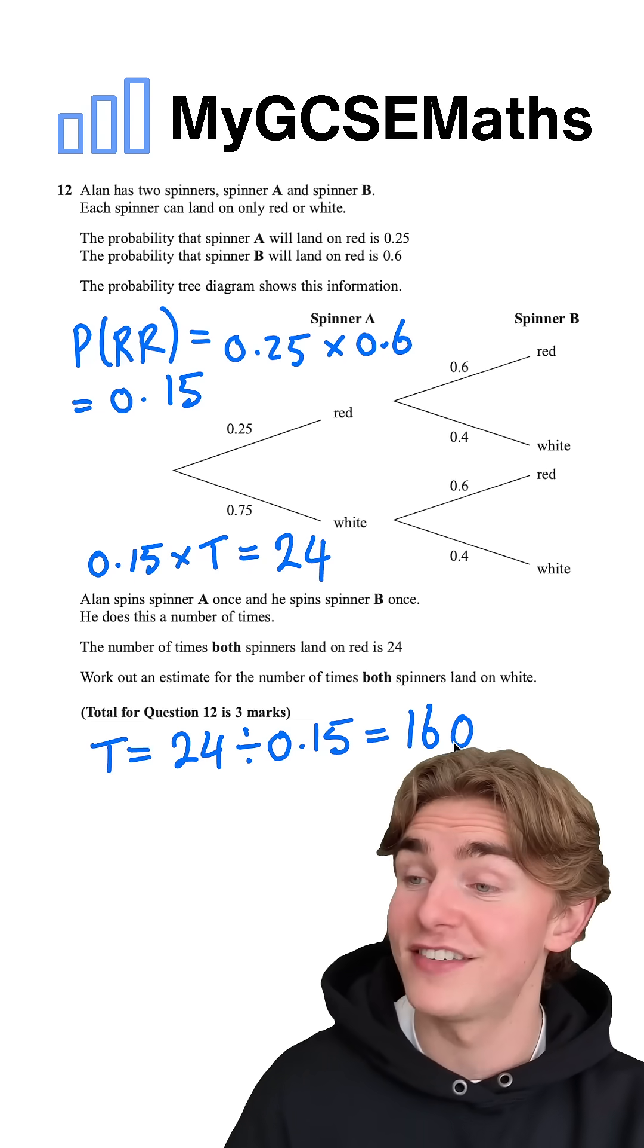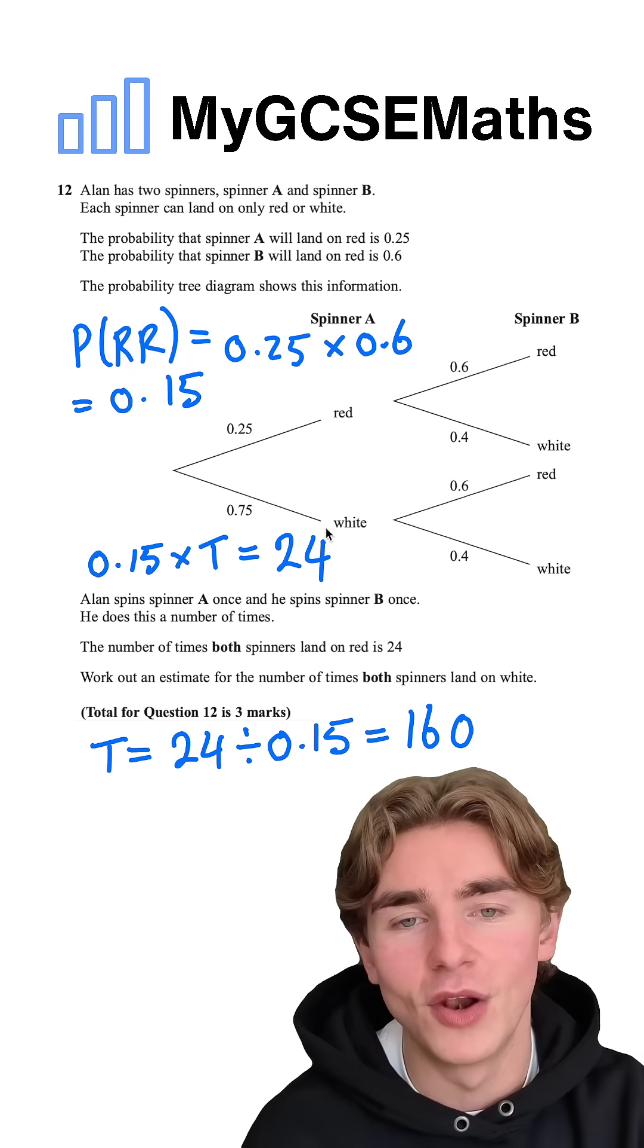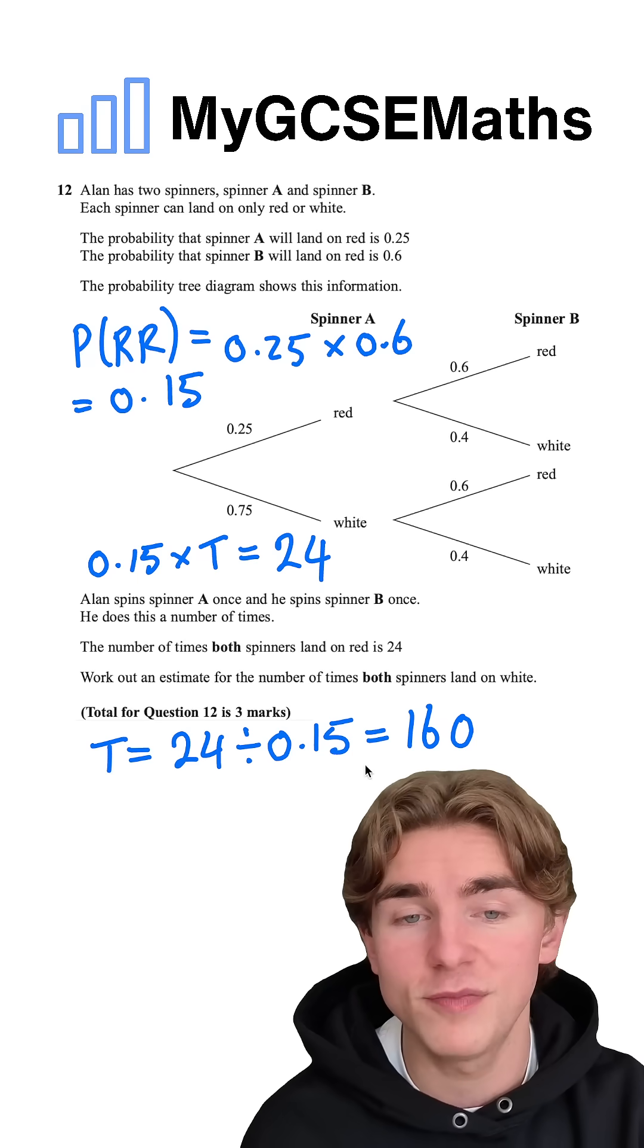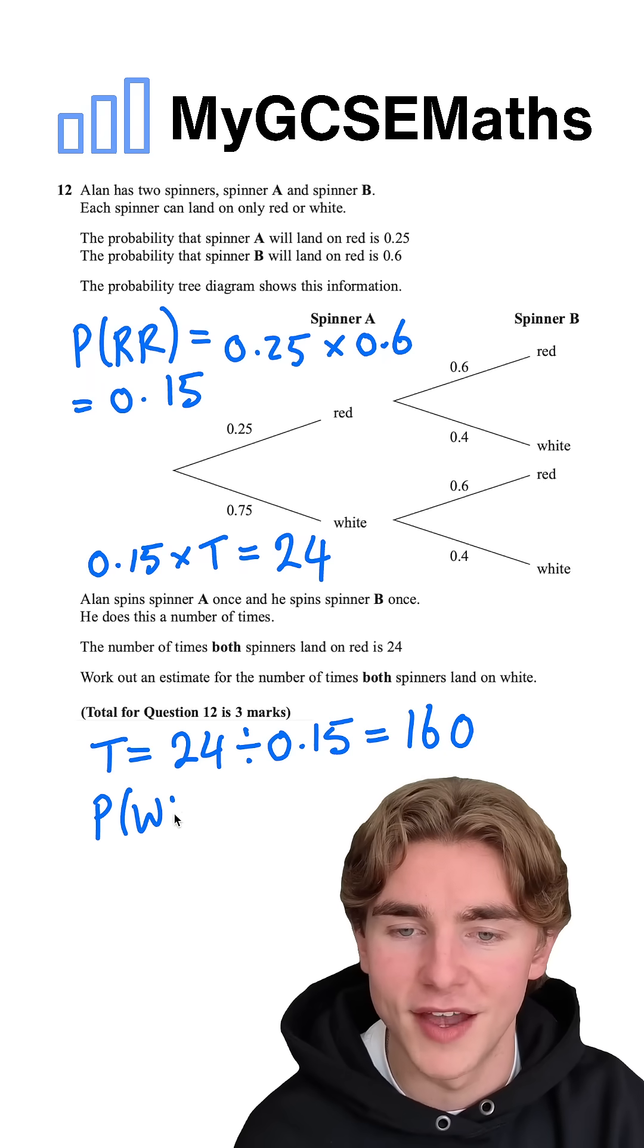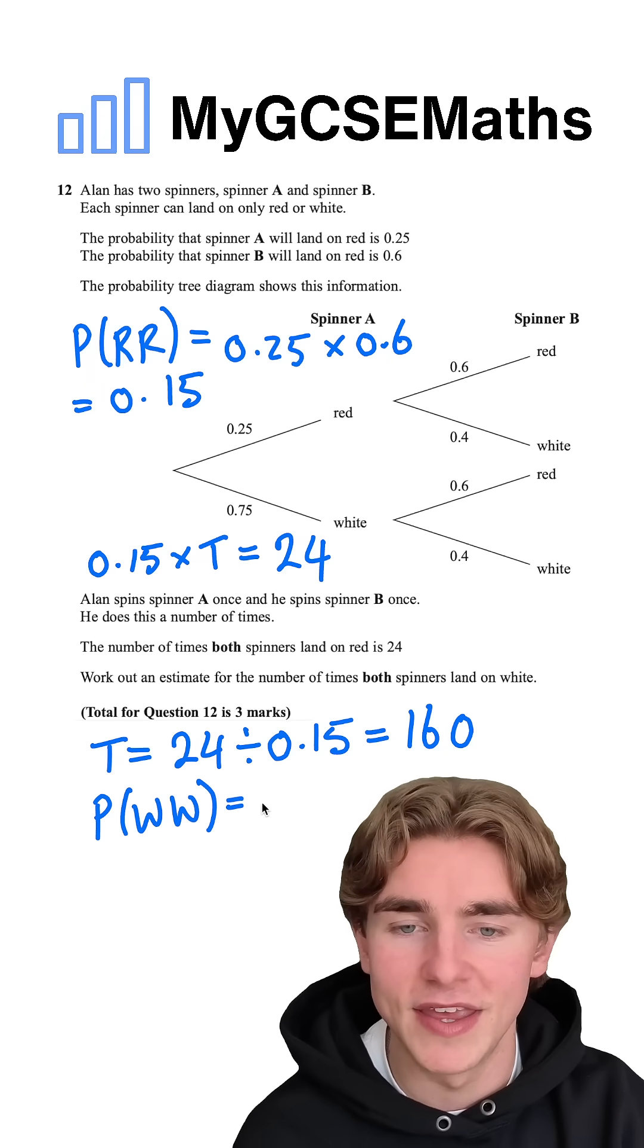Now, how can we find an estimate for the number of whites? We can do the probability of getting white and then white times 160. So we can start by working out the probability of white, white. This is going to be equal to 0.75 times 0.4,